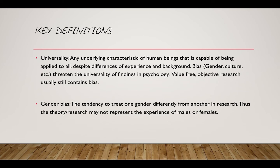Some key definitions: universality and gender bias. Universality really refers to those characteristics of human beings that we can generalise — so one might be short-term memory capacity. However, if we assume universality, bias can actually threaten the findings.